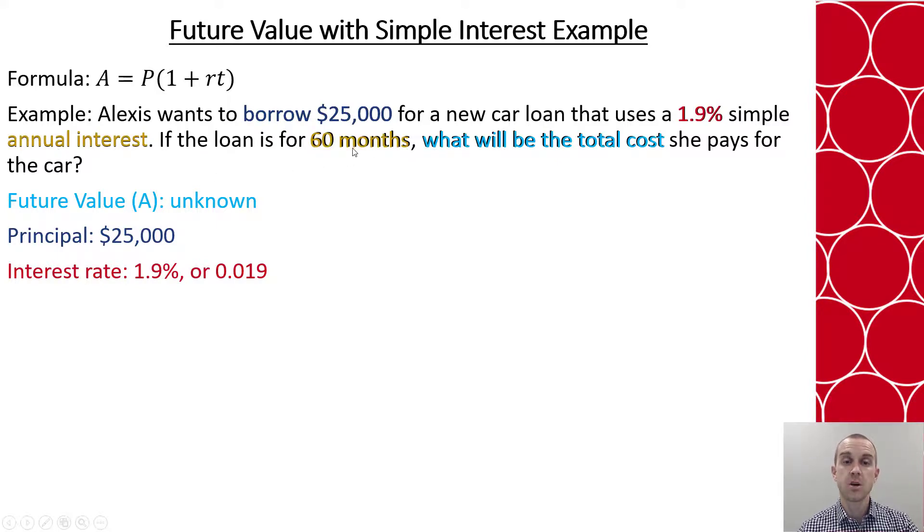Now they tell us time is a simple annual interest, but the time we're given is in months. So we've got to think, how do we change months into years to get that annual interest? Well, we know that there's 12 months in 1 year. So we could do 60 divided by 12 and see it's 5 years.